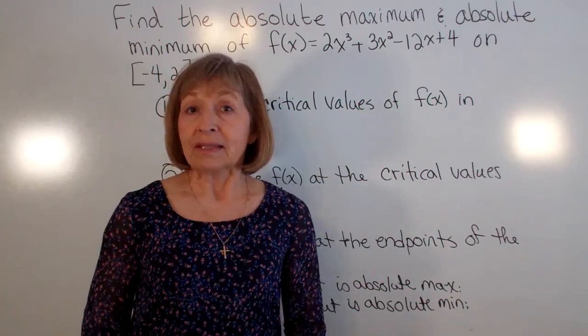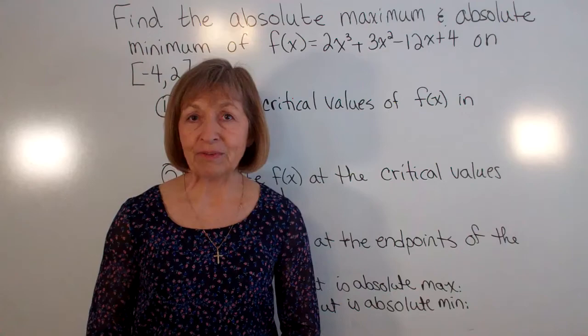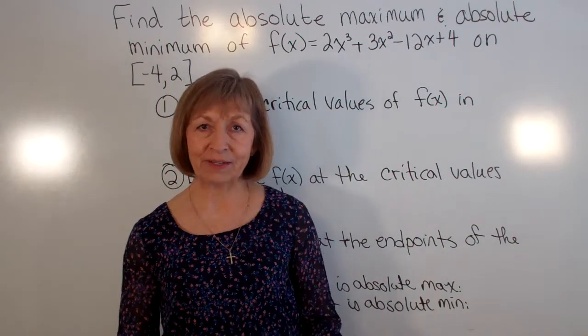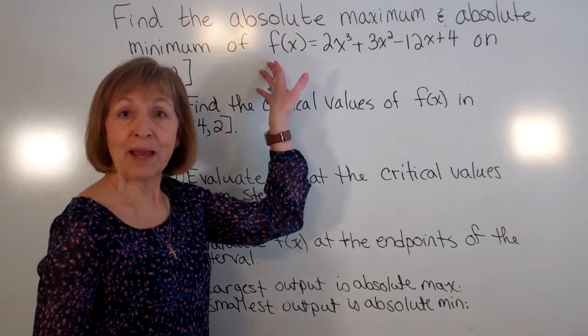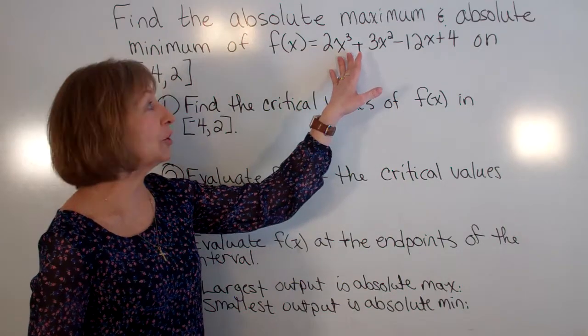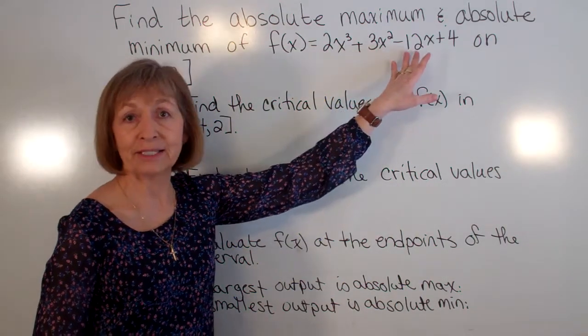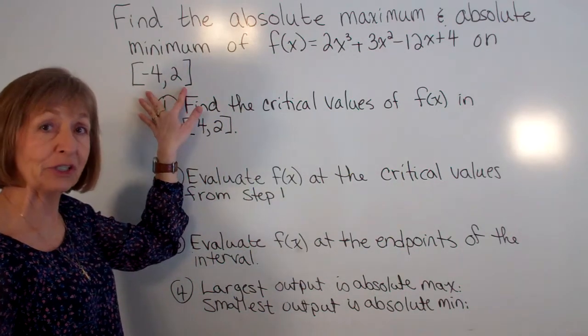Now that video just gave the specifics about the extreme value theorem. In this video we're going to specifically look at an example. So here I want to find the absolute max and min of my function f(x) = 2x³ + 3x² - 12x + 4 on this closed interval from -4 to 2.